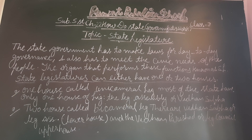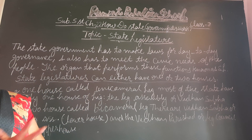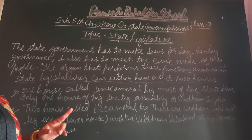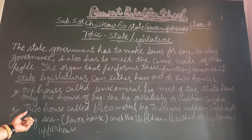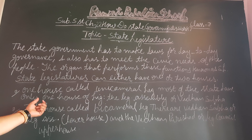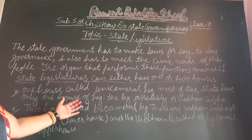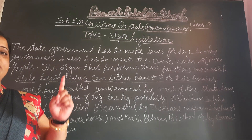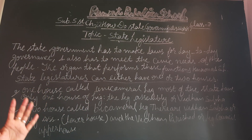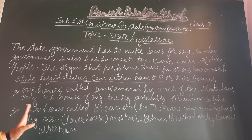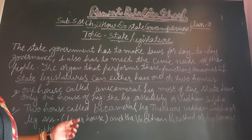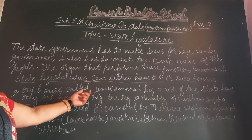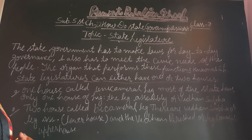Now, the state legislature is also divided into two houses. The first type has only one house, called unicameral legislature. Most of the states have only one house of legislature, meaning they are in the form of unicameral legislature.